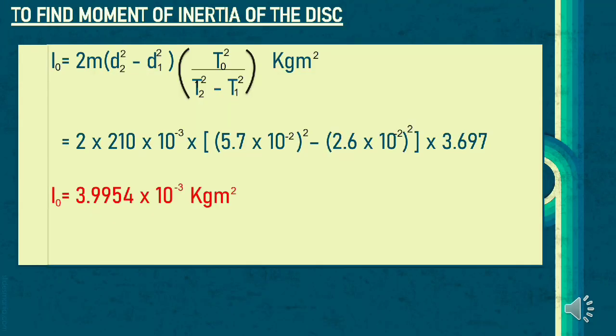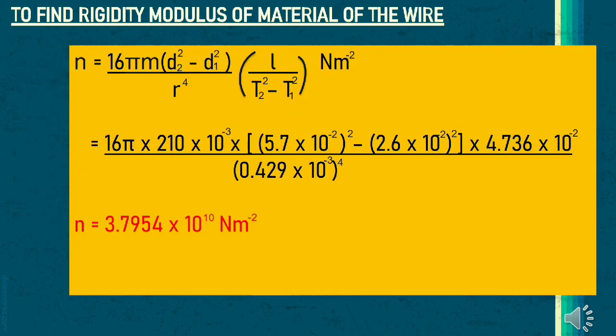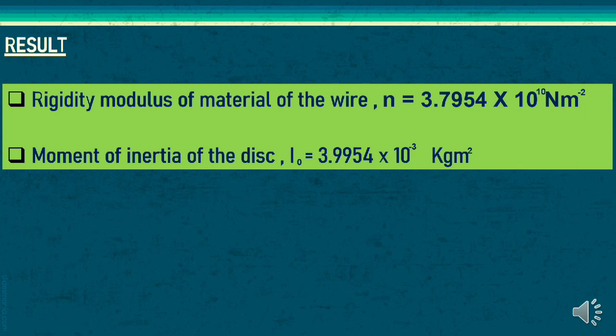Moment of inertia of the disc is calculated by substituting the observed values in the formula. Rigidity modulus of the material of wire is calculated by substituting the observed values in the formula. These are the results of the experiment.